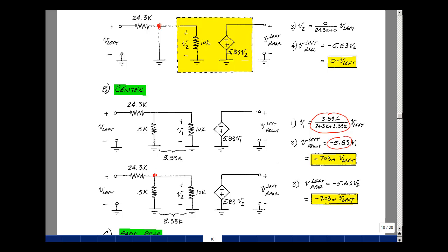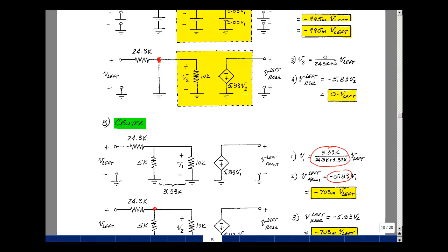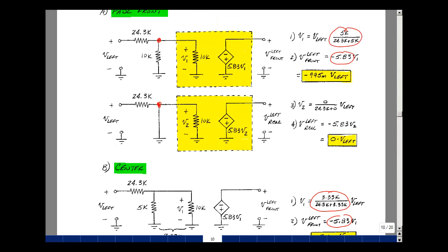Now if you put the pot in the fade rear position, you're going to just exchange these two. So we'll have a short circuit here and we'll have a 10k resistor here. We'll have this result now for the left rear speaker and this result for the left front speaker. Basically we're shorting out V1, so we're going to get nothing out. Here we get that voltage divider again of 5k. This is the Orban pan pot circuit.